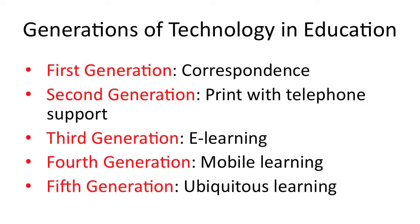In terms of technology history, the first generation used mail to send information to distance students. When the telephone came about, we had print with telephone support, where students contacted the instructor via telephone for help. Then personal computers and notebook computers arrived, and we moved to the third generation — e-learning, electronic learning — where students accessed information using PC and notebook computers. Now we have mobile technologies: tablet computers and smartphones, representing the fourth generation of learning, where students access information on mobile devices to learn anywhere, anytime.